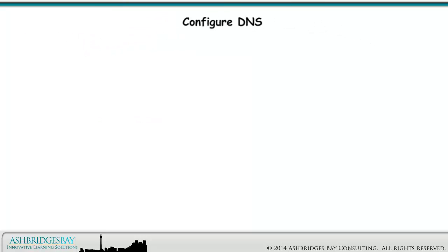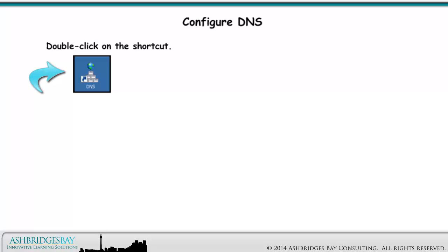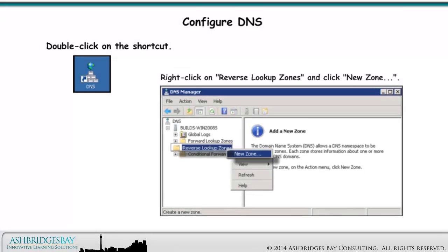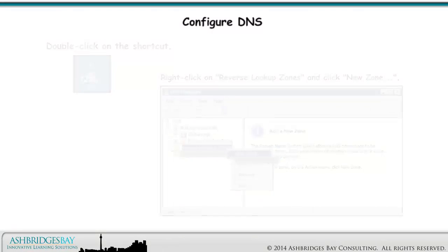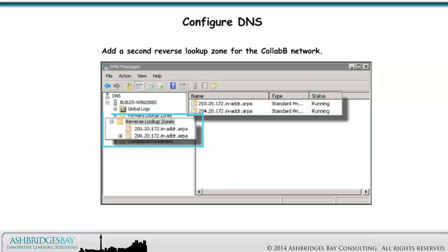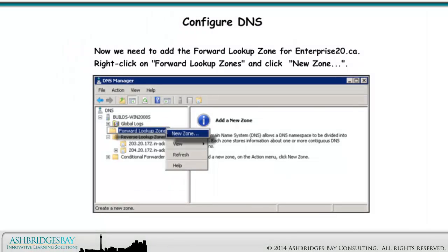Now we configure DNS. Double-click on the shortcut. We need a reverse lookup zone if we configure DNS on CUCM to satisfy the CUCM installation requirements. We need reverse lookup properly configured for our CUCM installation to succeed if we configure the CUCM as a DNS client. Right-click on Reverse Lookup Zones and click New Zone. Add a second reverse lookup zone for the CLAB-B network.